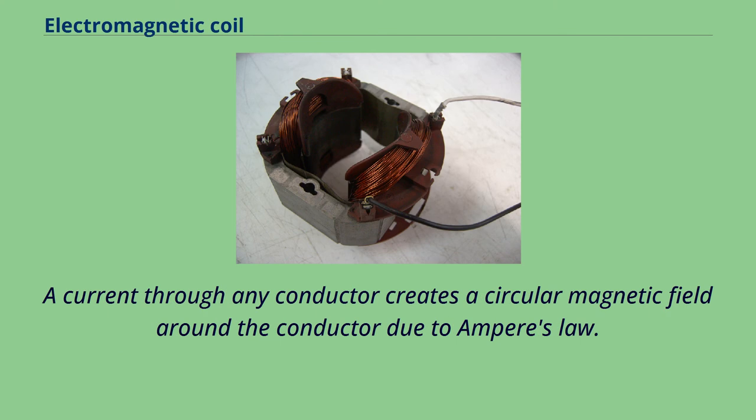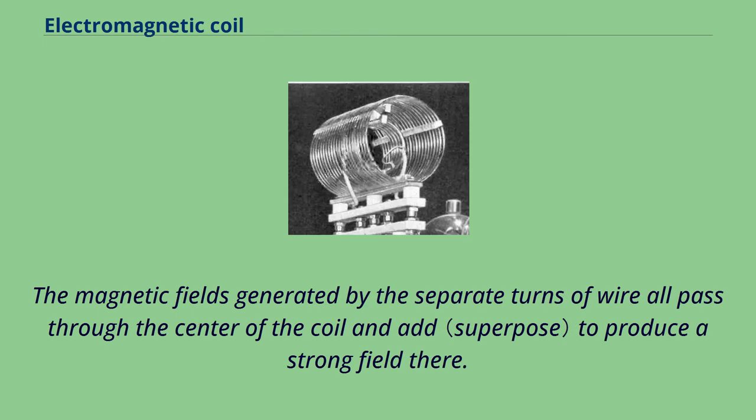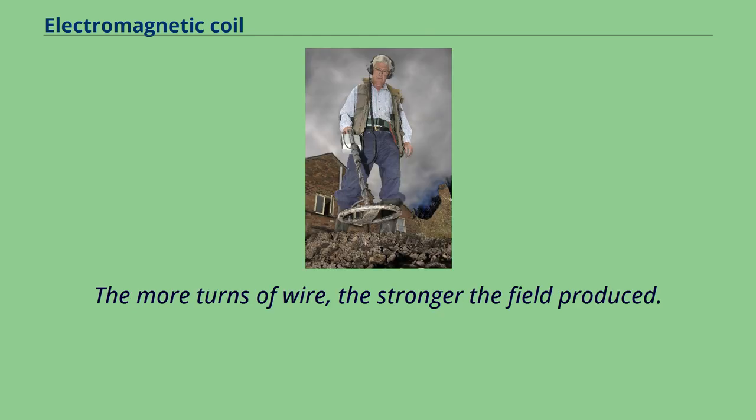A current through any conductor creates a circular magnetic field around the conductor due to Ampere's law. The advantage of using the coil shape is that it increases the strength of the magnetic field produced by a given current. The magnetic fields generated by the separate turns of wire all pass through the center of the coil and add to produce a strong field there. The more turns of wire, the stronger the field produced.